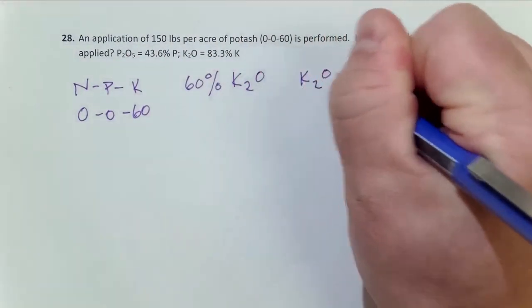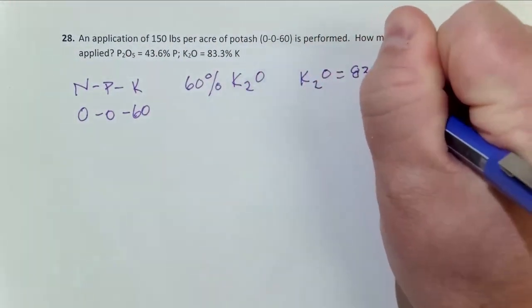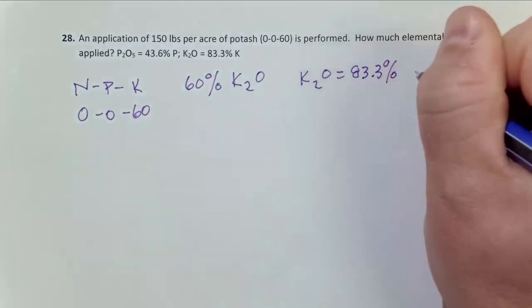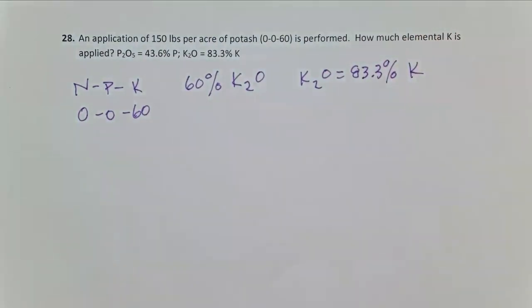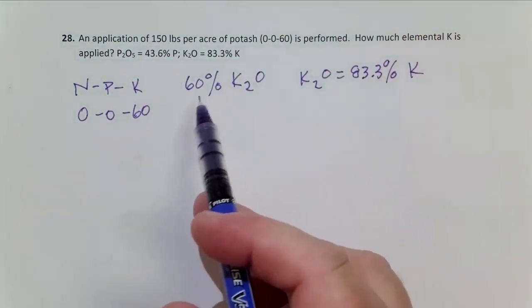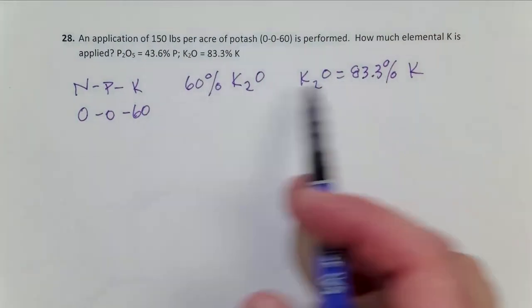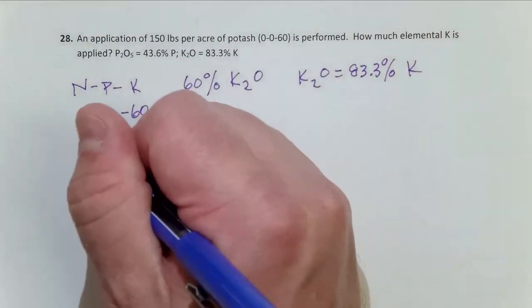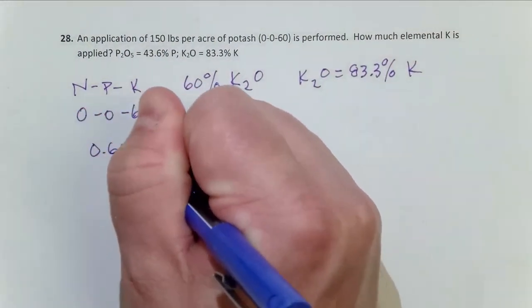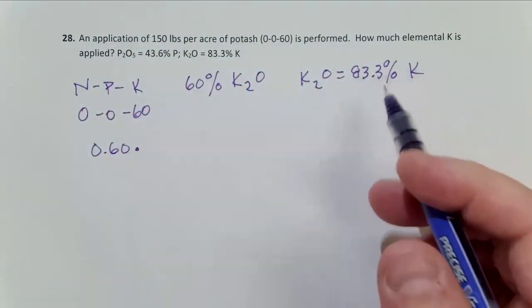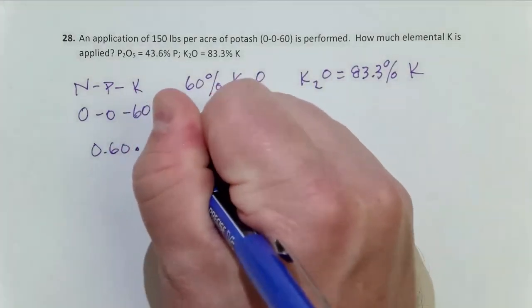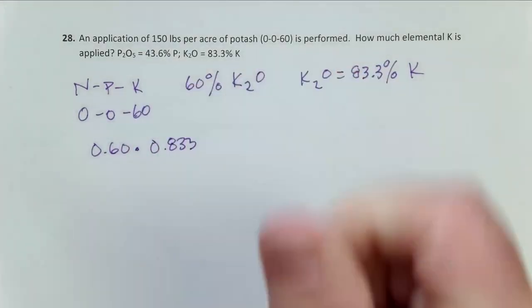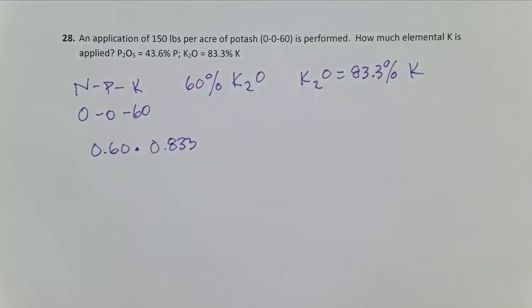We need to take basically the proportions here. So divide 60 by 100 and that's 0.60. Take 83.3 divided by 100, that makes it 0.833, just converting those percentages to proportions.